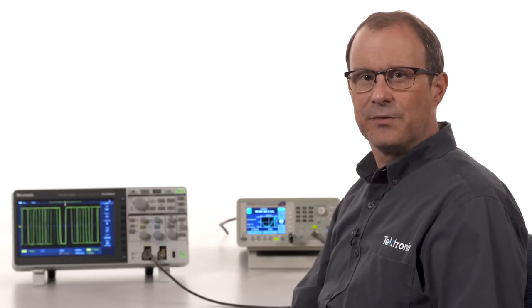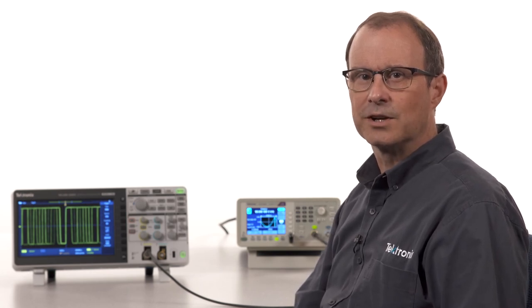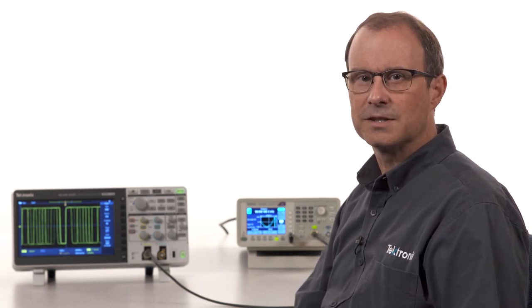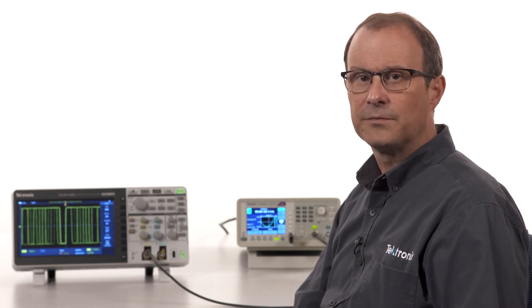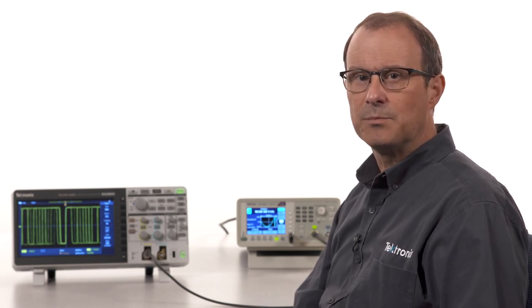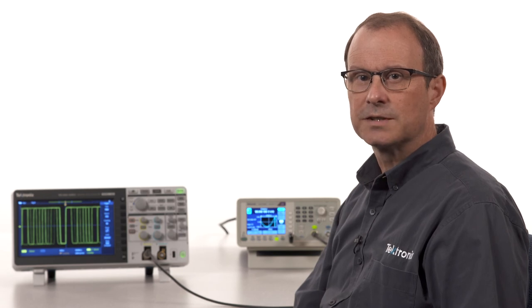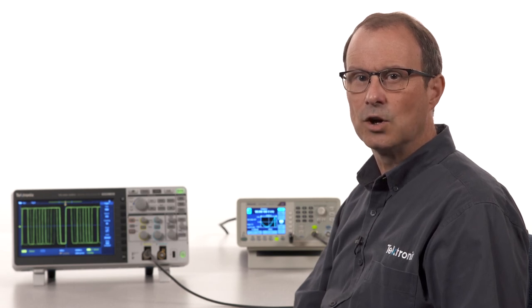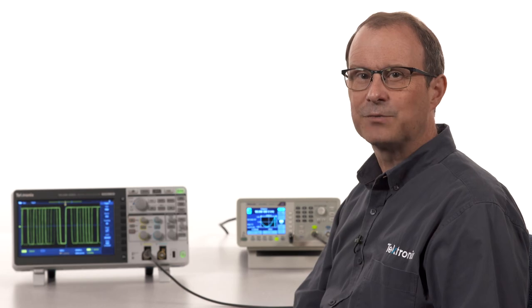So that's it for our advanced triggering tutorial. I showed how pulse width and runt triggers can help capture digital anomalies, and we took a second look at trigger holdoff. In the next video, we'll look at basic time and amplitude measurements by reading off the display or using cursors. Thanks for watching.